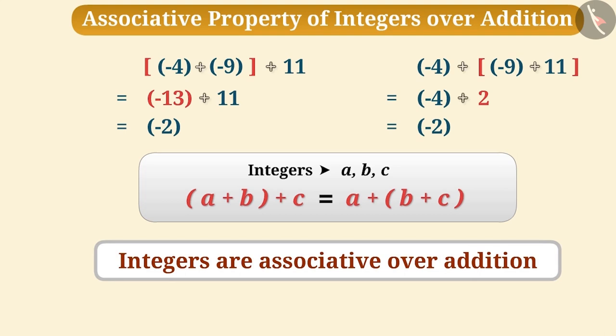Now you might have understood that to find the sum of minus 4, minus 9, and 11, we can group them in any order.